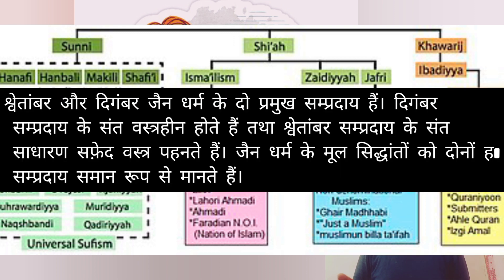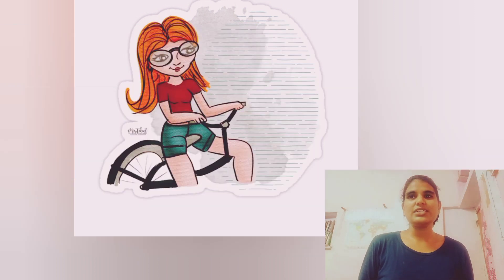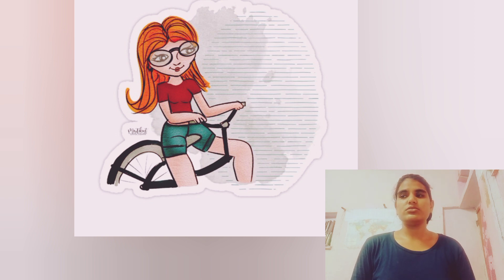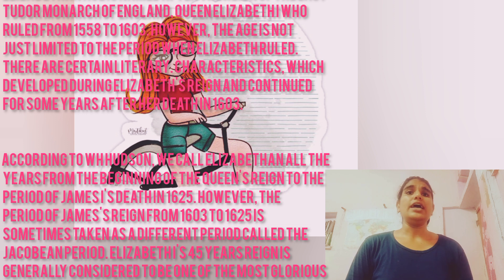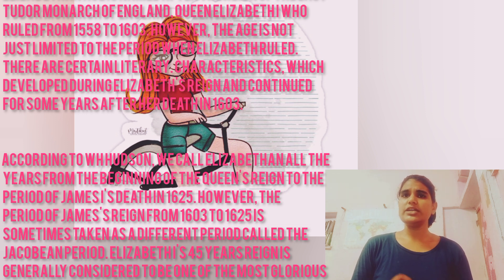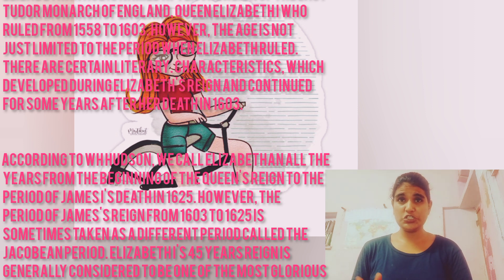In Christianity, the two main sampradayi — denominations — are Catholics and Puritans, in the same way as other religions have sub-sects. This was part of the broader Elizabethan and Tudor dynasty era. During the reign of Queen Elizabeth I, from 1558 to 1603, historians often depict it as a golden age.